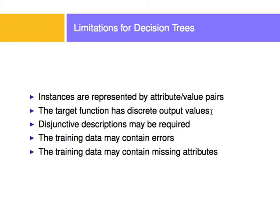The target function has discrete output values — it's only yes, no, or categories like that, but not a number. So if the instances are represented by attribute-value pairs, or the target function has discrete output values, those are things that are good for decision trees but are also limitations. We can look at disjunctive descriptions, which might be required for some complicated queries. The other thing is the training data might contain errors, and the training data might contain missing attributes.